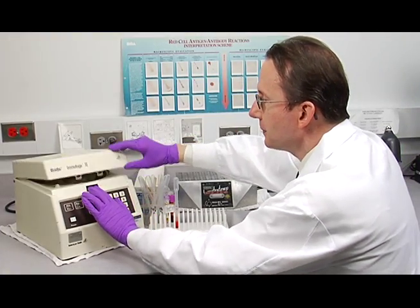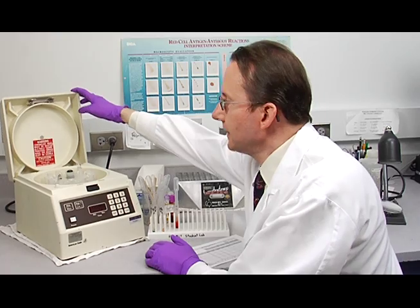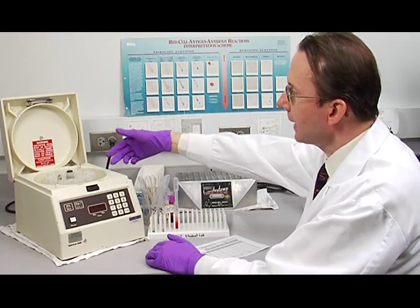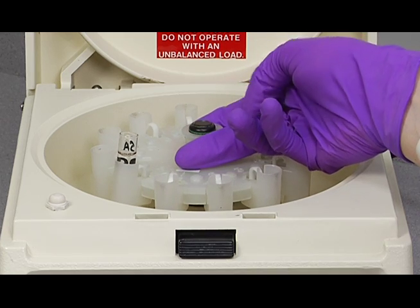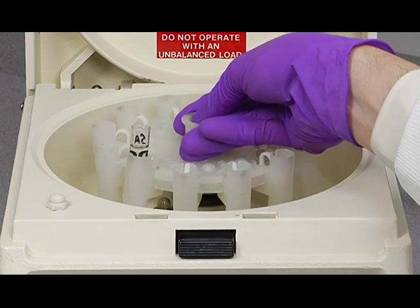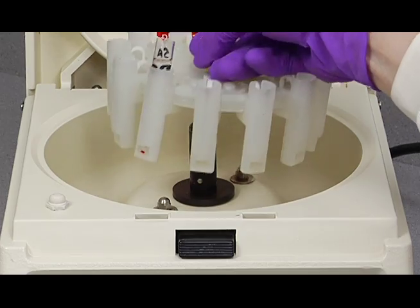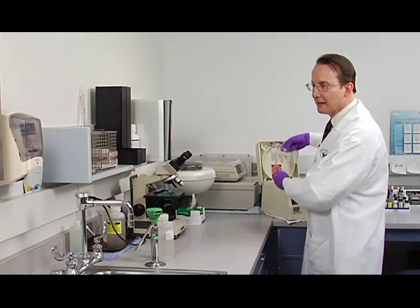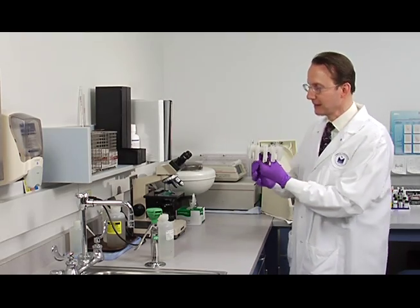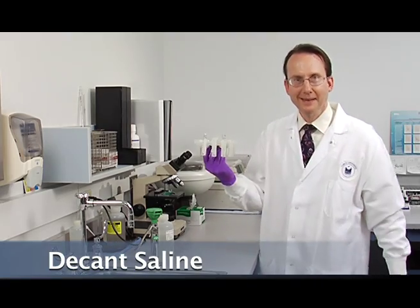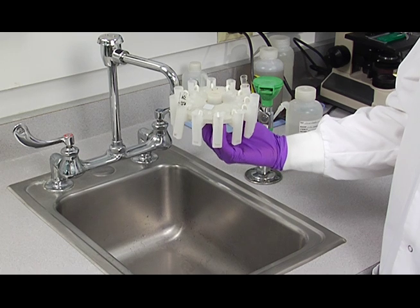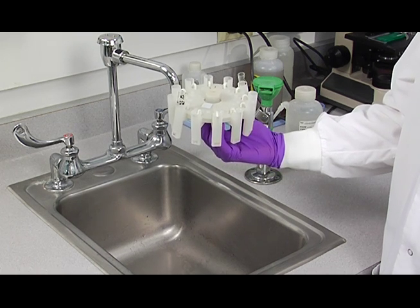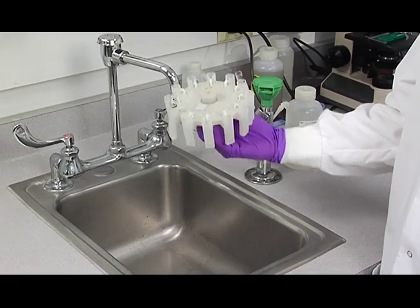So after they've spun down for 60 seconds, you can take the head out of the centrifuge. Put your fingers under the flange here and push down on the shaft. Bring it out like this. Then take the tubes over to the sink to decant the saline. And you're going to hold the tubes right here and just invert the tubes. Let the saline run out. No shaking.